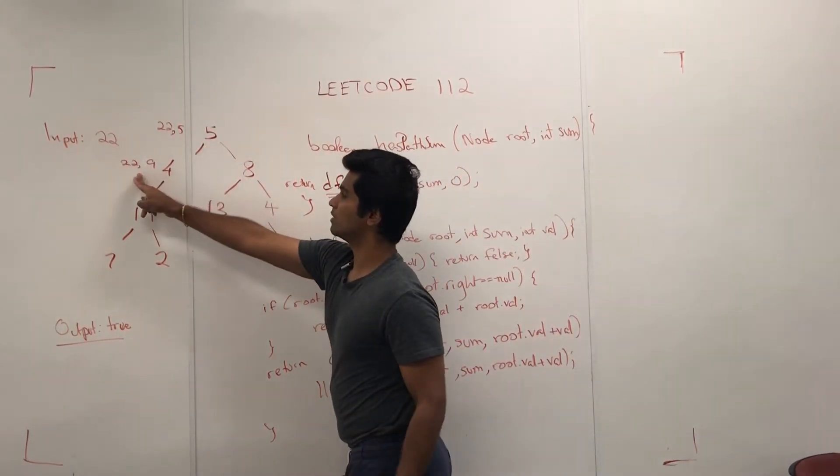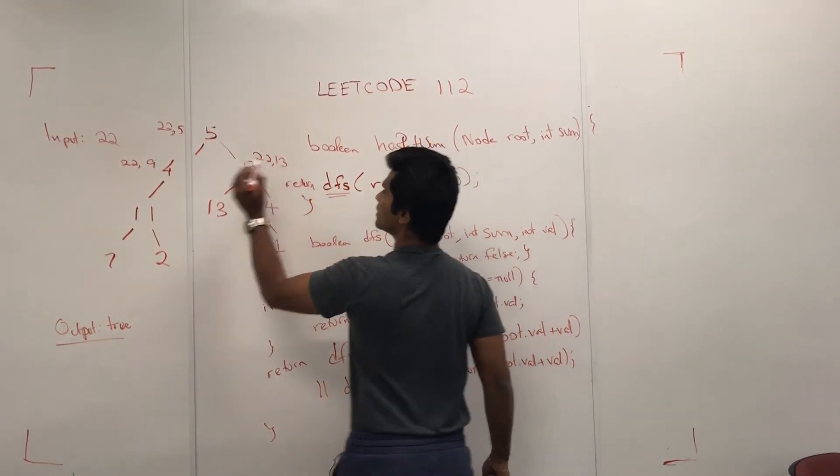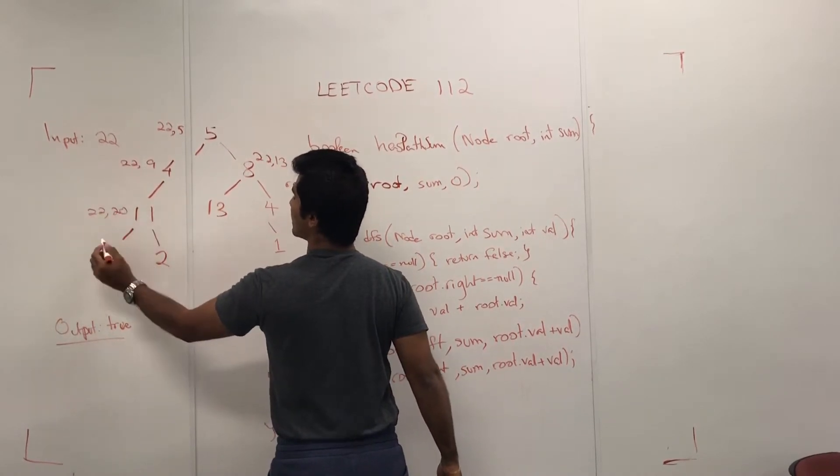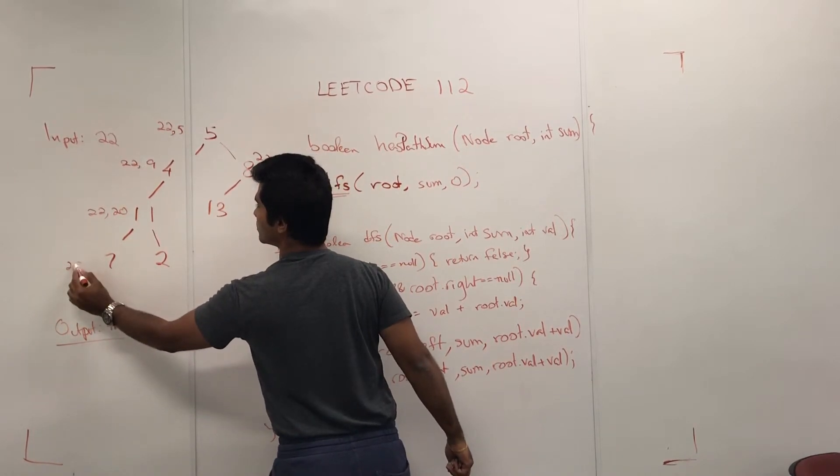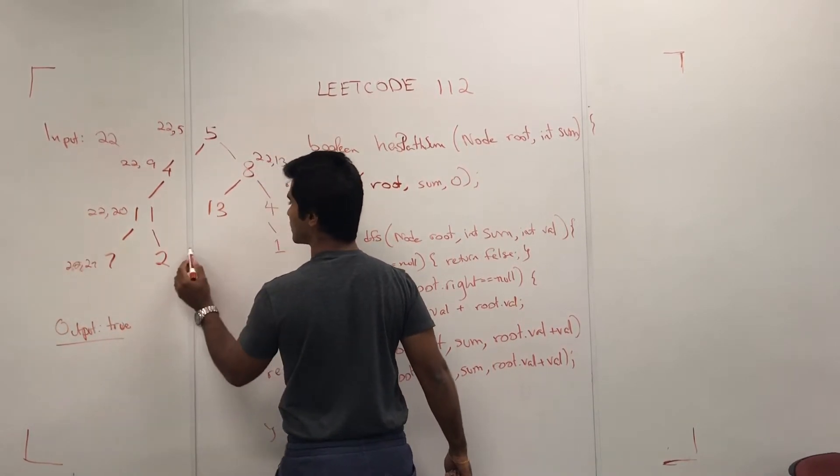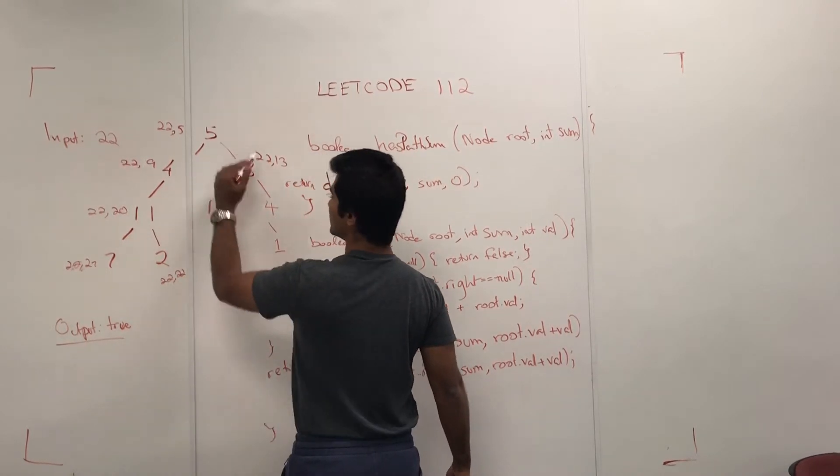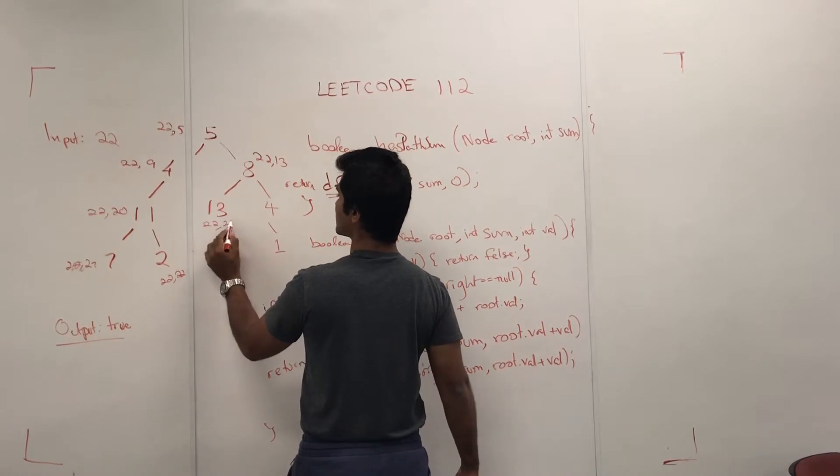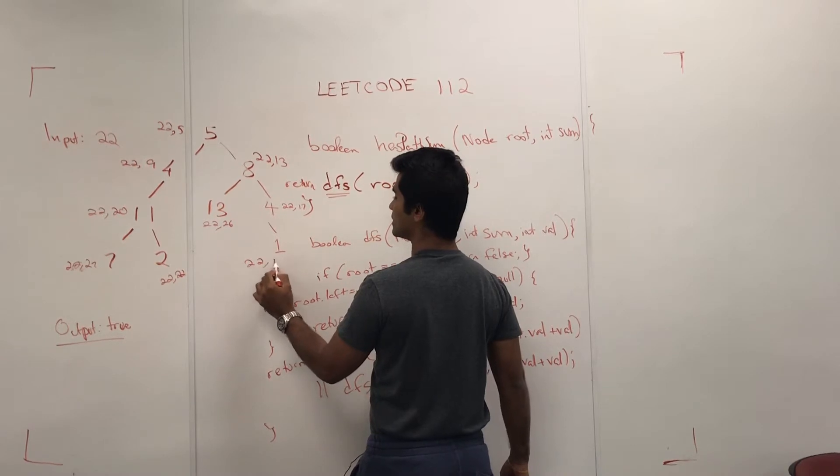So when it goes here, it's going to be 22, 9, and then here it's going to be 22, 13. Here it's going to be 22, 20. Here it's going to be 22, 27. And then here it's going to be 22, 22. Here it's going to be 22, 26. Here it's going to be 22, 17. And here it's going to be 22, 18.